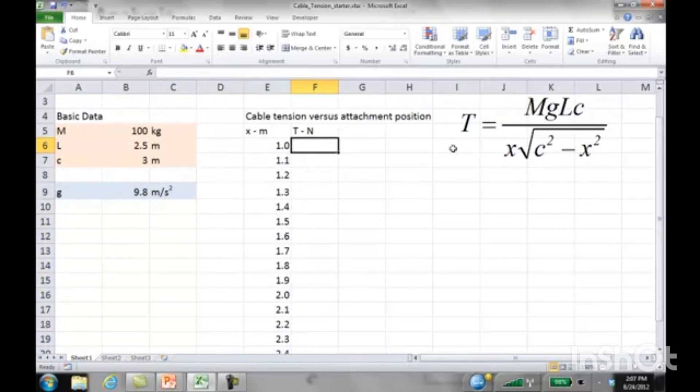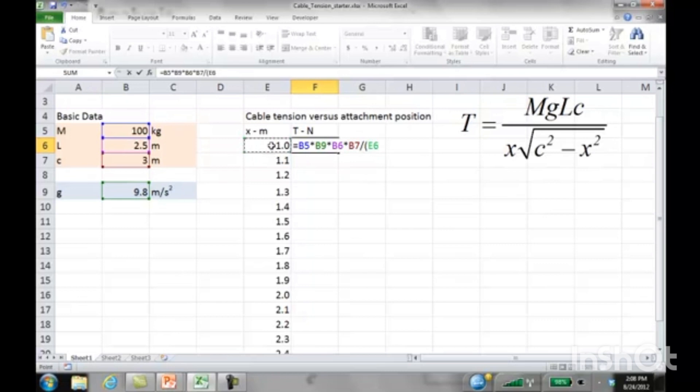Now I'm going to put in a formula for the tension as a function of attachment position. All Excel formulas start with equal. Our tension is going to equal mass, so I can click here for mass, and multiply by gravity 9.8, times L, so I point into that cell B6 and click, times C. Now we're dividing by, and I'm going to put a parenthesis here to maintain order of operations, times X which is our independent variable, so I click on cell E6.